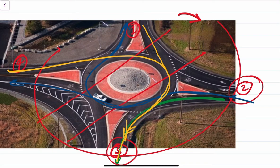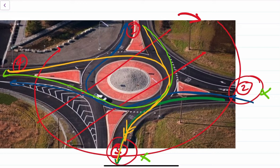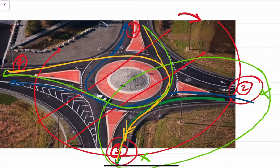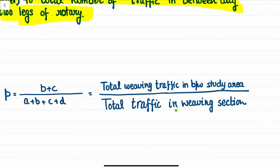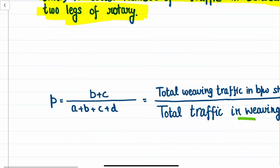There may also be some traffic that is neither coming from leg 2, nor going to leg 3 — traffic that will just move in between the section and then go to some other legs. All traffic moving in our study section (between leg 2 and leg 3) is considered, and the ratio of weaving traffic to total traffic in that section is what we call the weaving ratio.